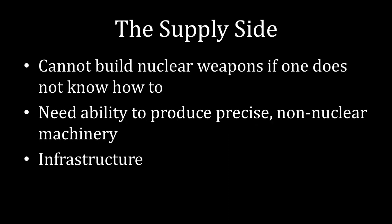Diving a little bit deeper into the theory, there are three main points to cover. The first is obvious: you cannot build a nuclear weapon if you do not know how to build a nuclear weapon. The other two components are less obvious. You need the ability to produce precise machinery that is not directly involved in a nuclear reaction, but is what allows you to access that nuclear reaction. And the final component is that you need the infrastructure to be able to produce that sort of machinery. Absent these three things, you can't really build a nuclear weapon.